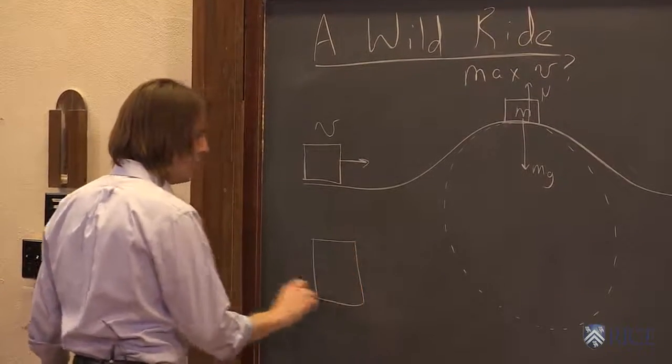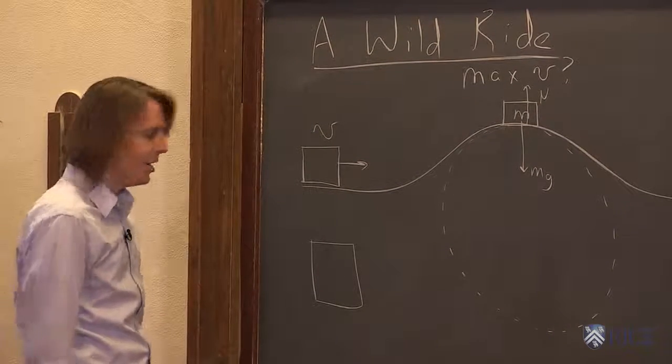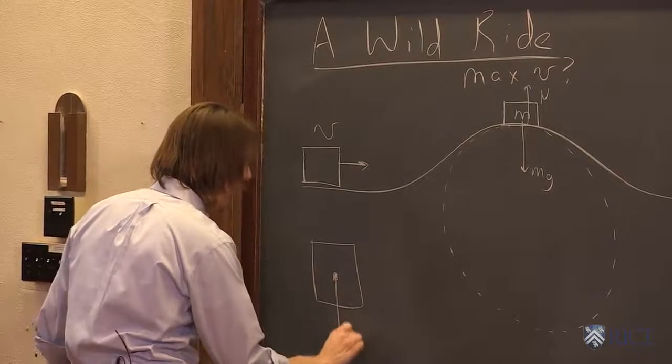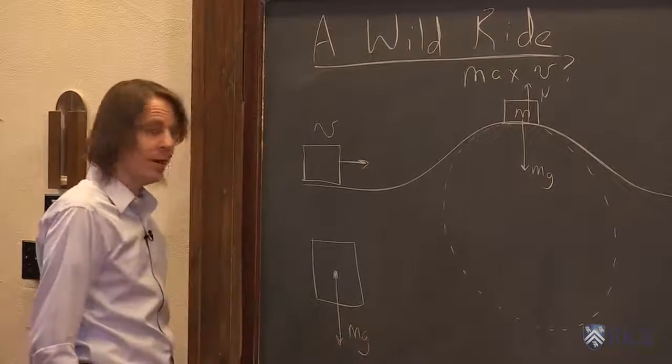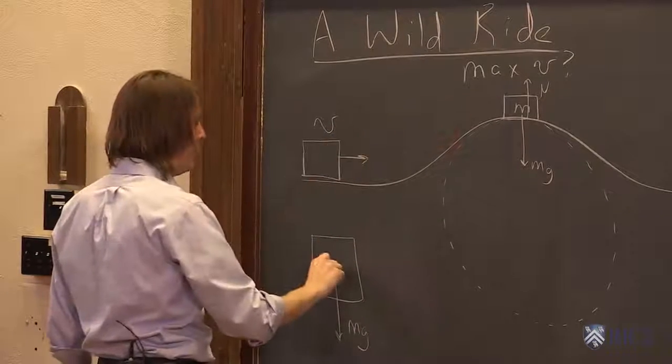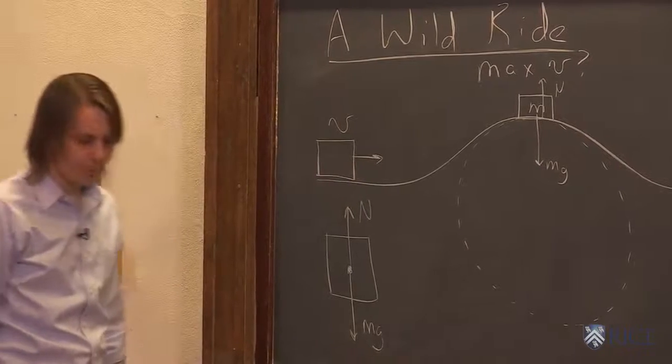So here's our car and we're going to do a free body diagram because you always want to do a free body diagram. So we're going to think about the two forces on our car, treating it as a point mass. mg is down. The force due to gravity is down. And of course the normal force pushes perpendicular to the surface, so the normal force is up.